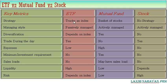The first key metric is strategy. ETFs are tracking an index — they take all the stocks in an index as-is. Mutual funds are a basket of stocks, and the selection depends solely on the mutual fund manager as per the fund's strategy. For stocks, there is no strategy because this is a single stock that you are selecting yourself.